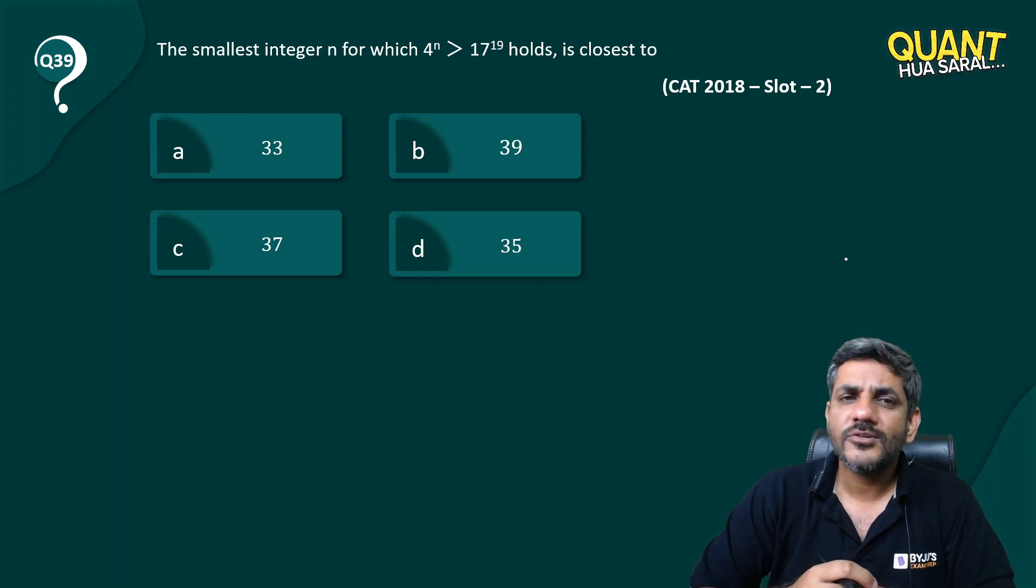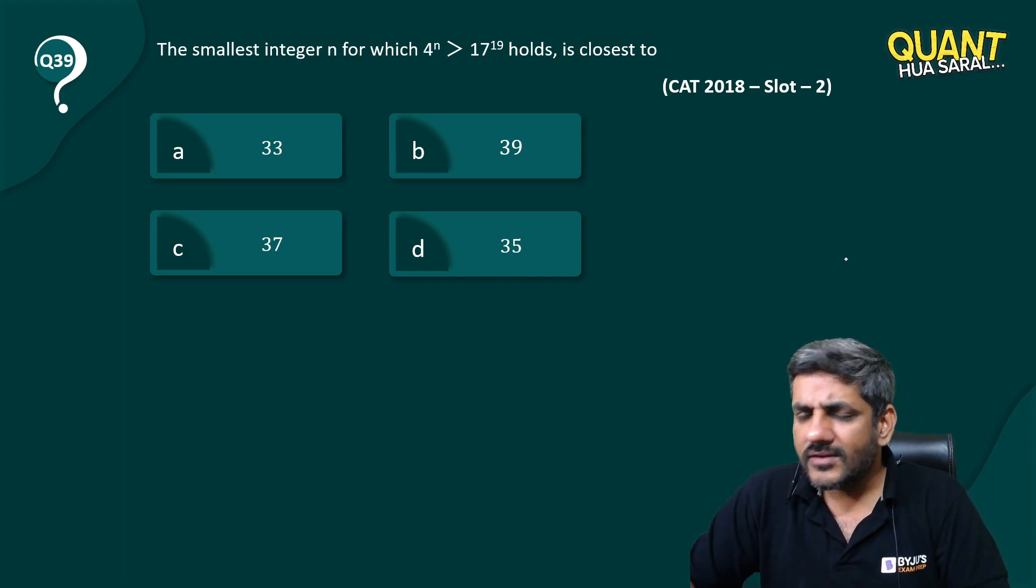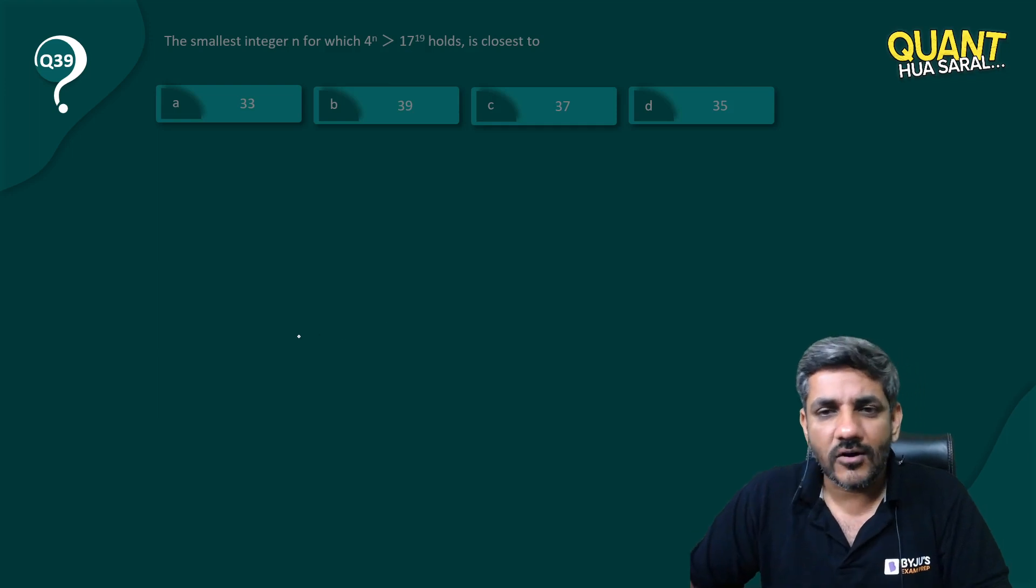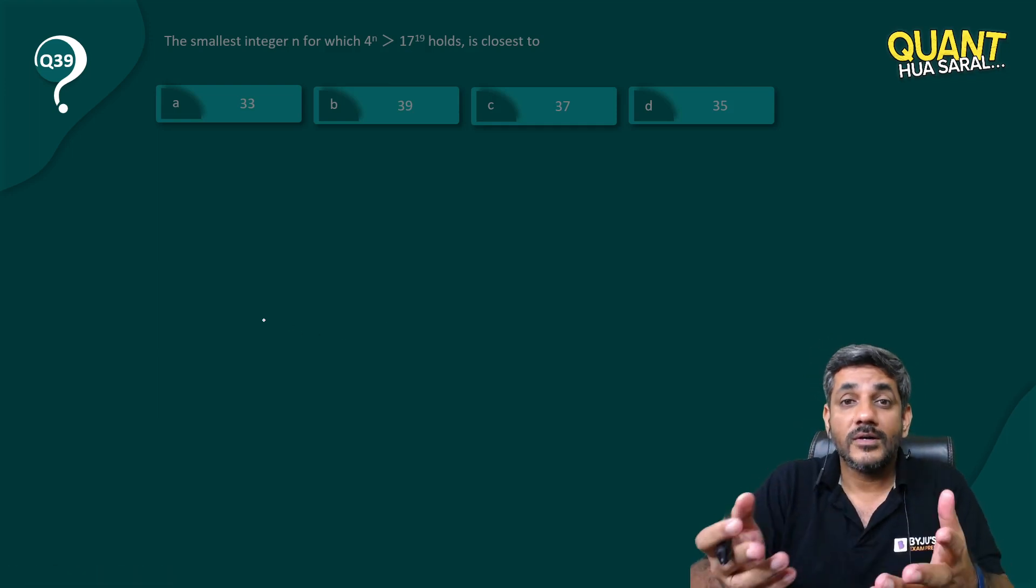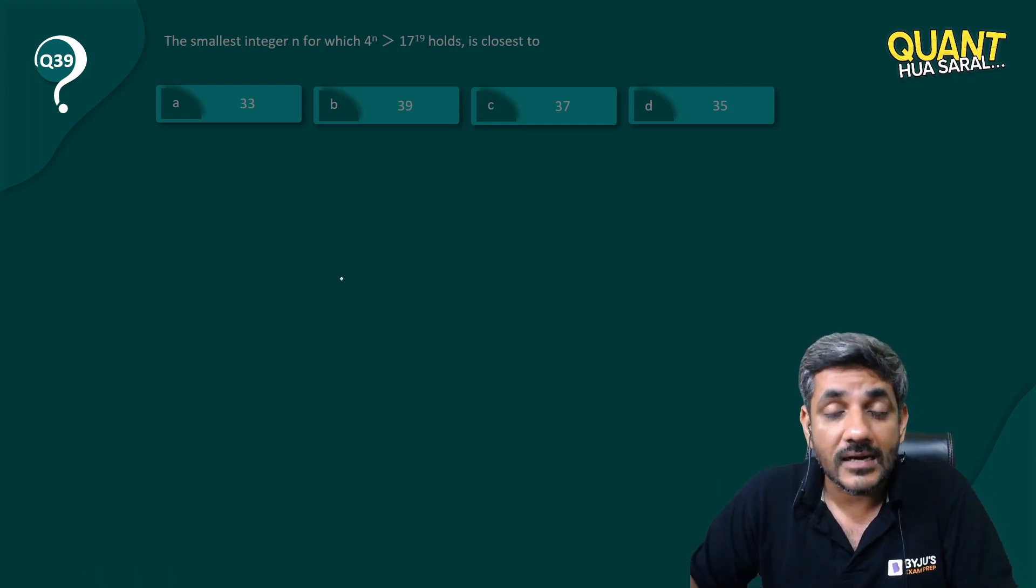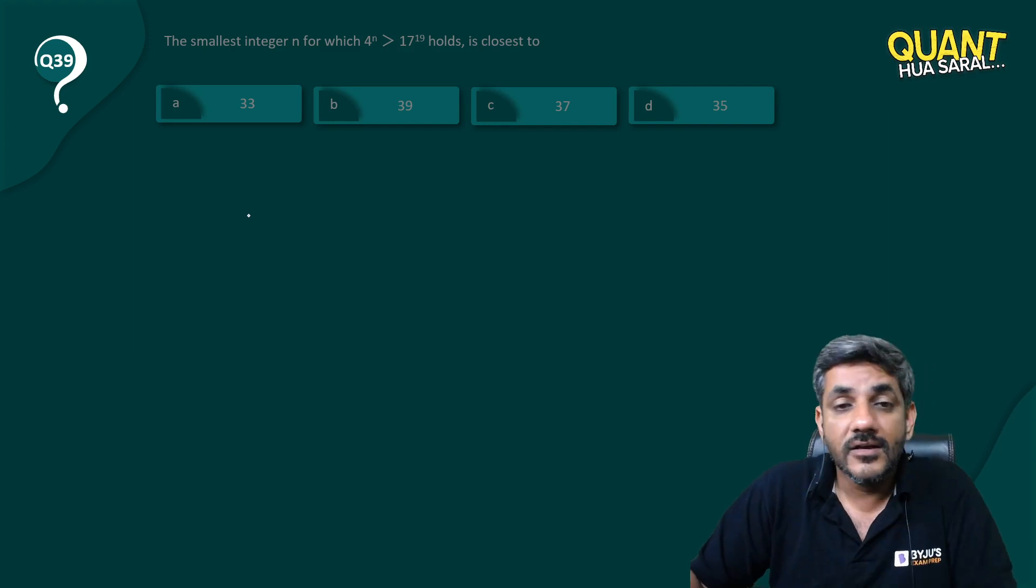How difficult is the question? It looks difficult because we do not know what is to be done. Normally when the powers are there, there's a variable in the power, we look for logarithm.